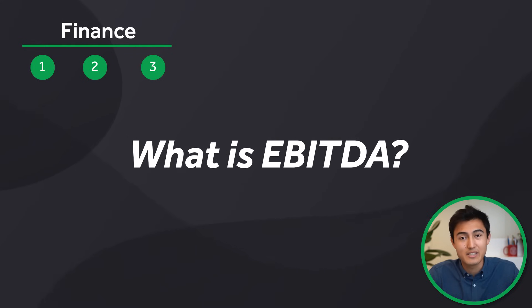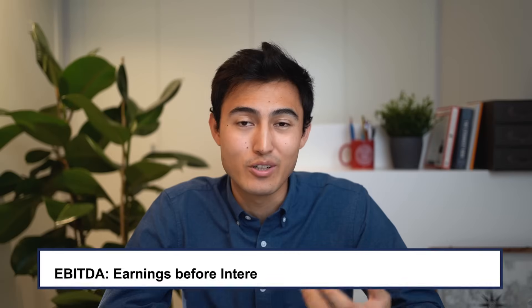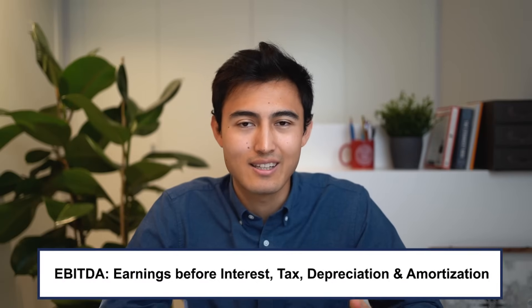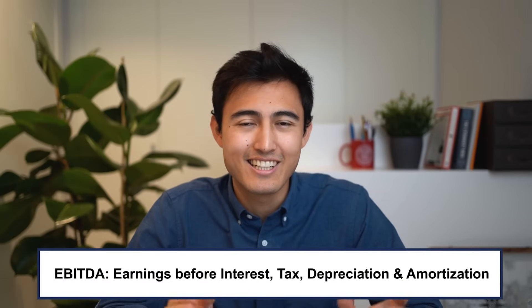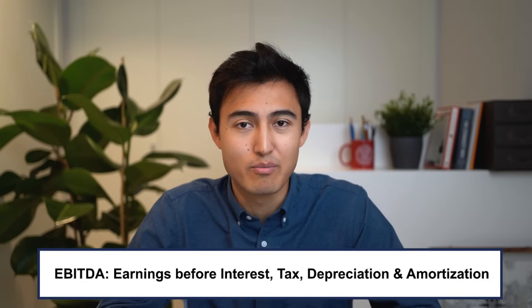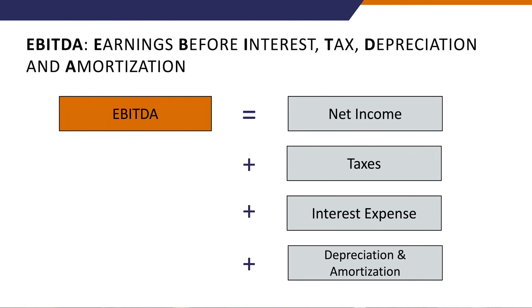The last finance question: what is EBITDA? EBITDA stands for earnings before interest, tax, depreciation, and amortization — in short, it's a measure of profitability. The formula is: net income plus taxes plus interest expense plus depreciation and amortization. It's popular because it eliminates the effects of financing and capital expenditures, allowing easier comparison of companies in the same industry based purely on operating profitability.